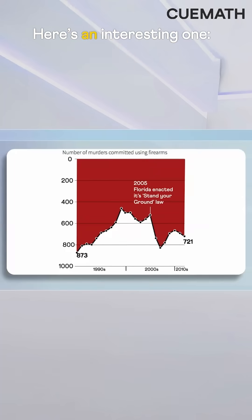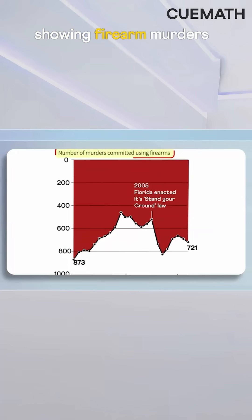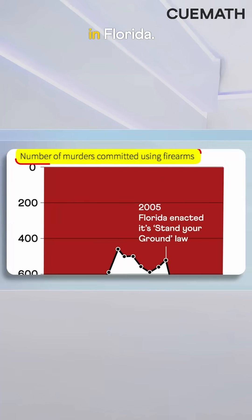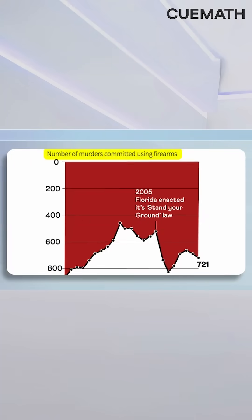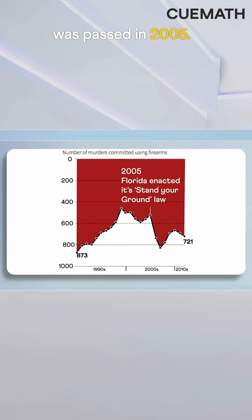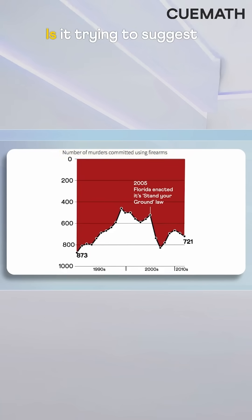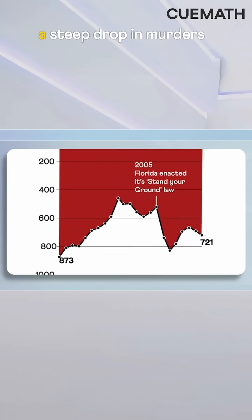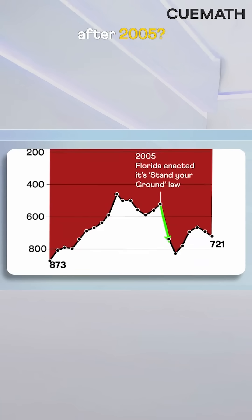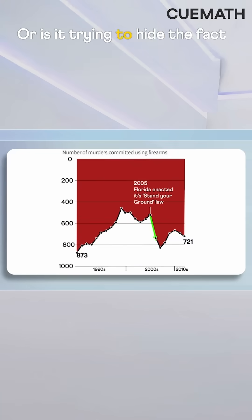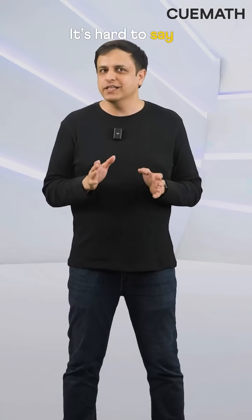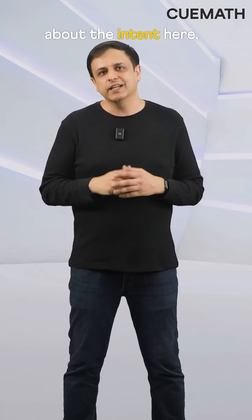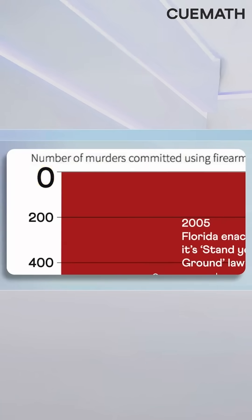Here's an interesting one showing firearm murders in Florida. A new law was passed in 2005. Is it trying to suggest a steep drop in murders after 2005, or is it trying to hide the fact that murders actually increased? It's hard to say about the intent here, but spot the zero.